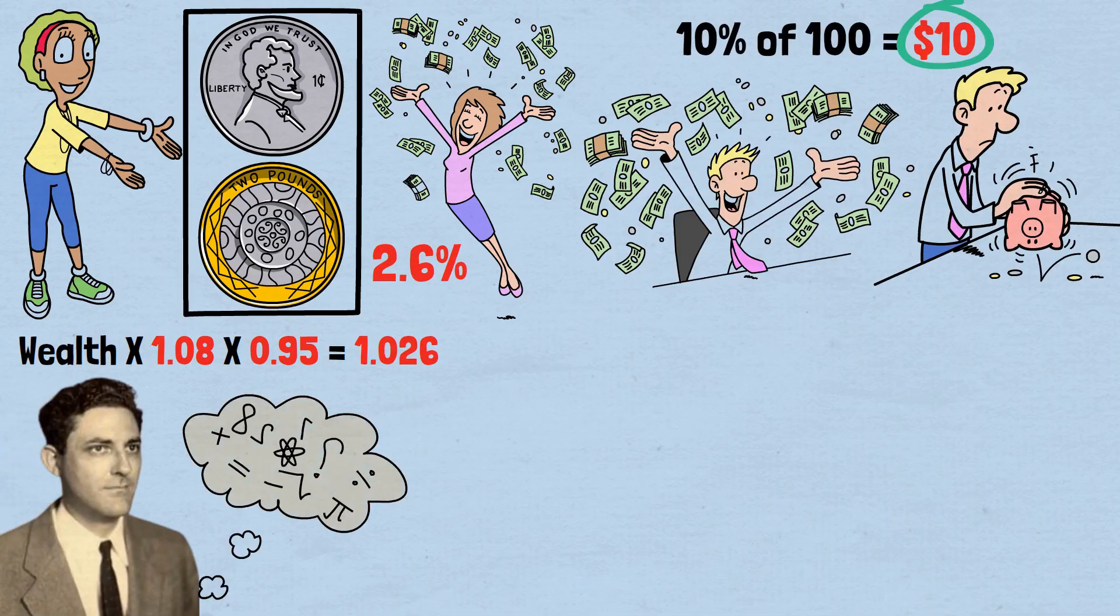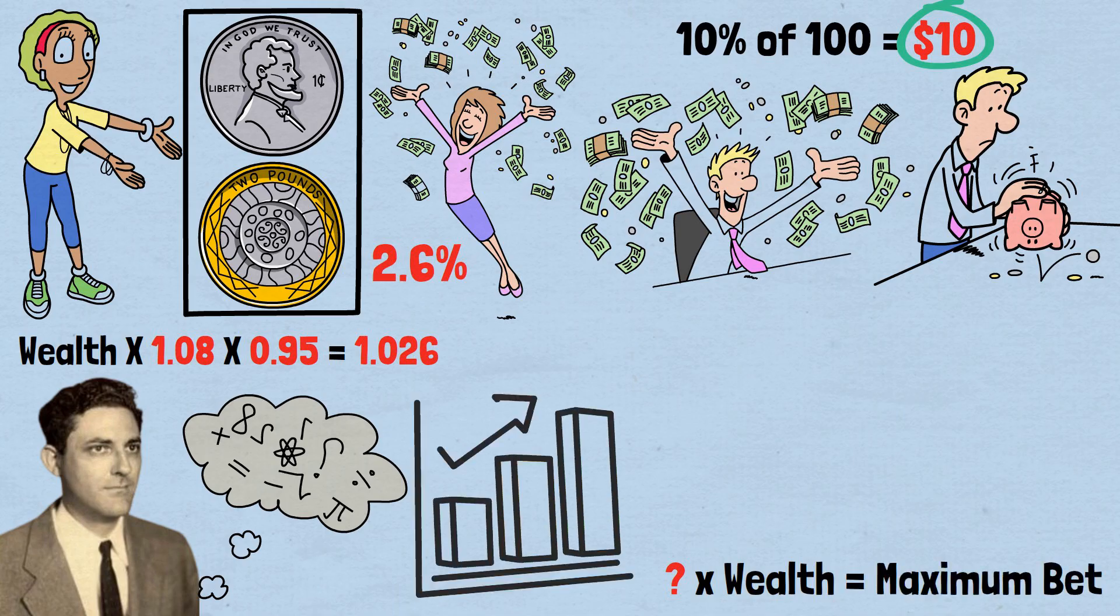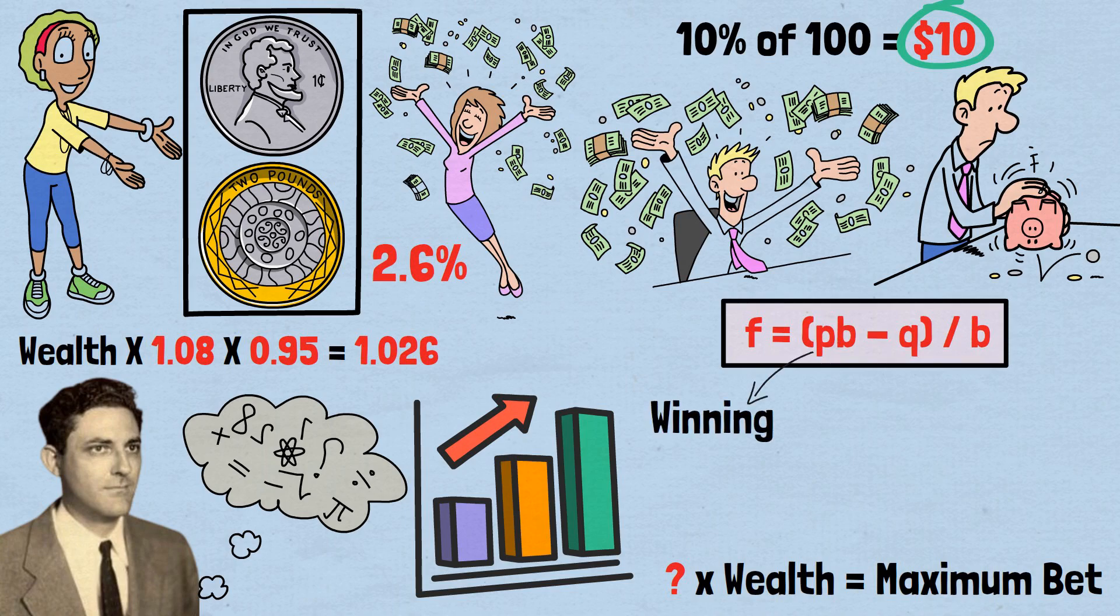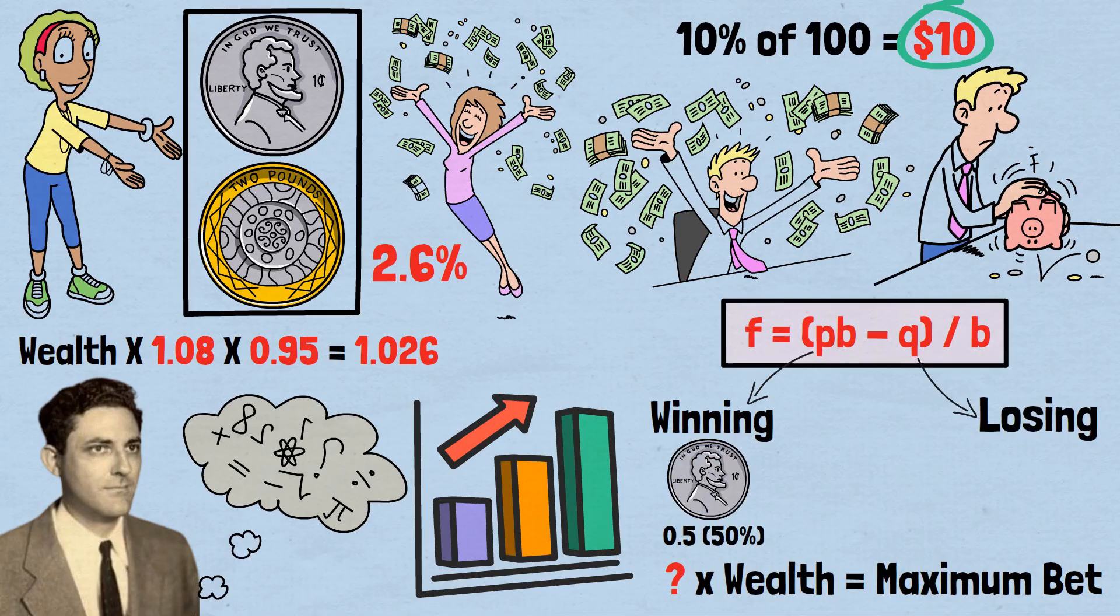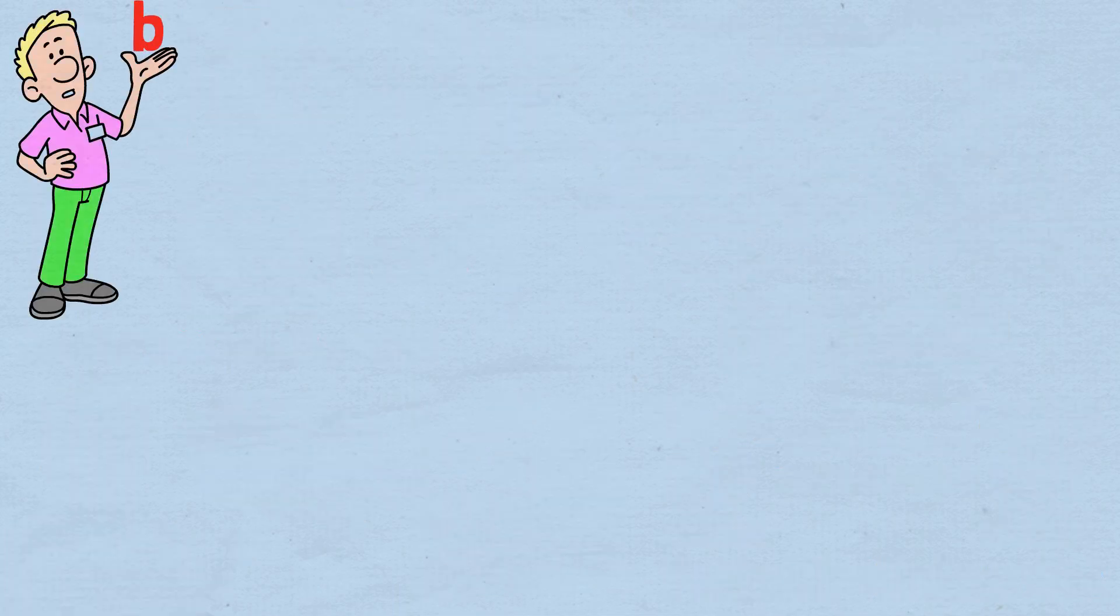Kelly went further. He developed a formula to determine the exact fraction of wealth we should bet to maximize our long-term growth rate. Kelly's original formula for optimal betting fraction is F equals PB minus Q slash B. Let's break down what each variable means. P equals probability of winning equals 0.5, 50% chance of heads. Q equals probability of losing 0.5, 50% chance of tails. B, the ratio of amount won to amount bet. Now here's where we need to be careful about B.